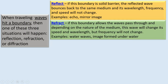Refraction occurs if the boundary allows the wave to pass through. Depending on the nature of the medium, the wave will change its speed and wavelength, but frequency will not change. For example, water waves moving from deep water to shallow water, or shallow water to deep water, or an image formed underwater.